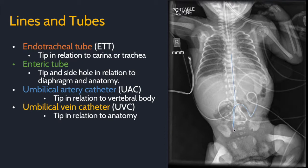The umbilical artery catheter, shown in blue, dives down to the iliac artery before going up the descending aorta. Describe the tip in relation to the nearest vertebral body. Counting down: T12, 11, 10, 9, 8, 7, 6, 5 — the umbilical artery catheter terminates in the region of T5.